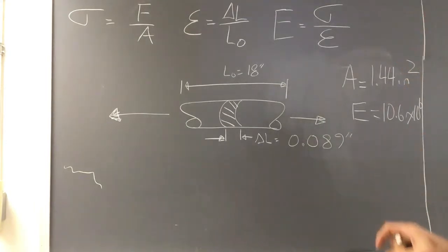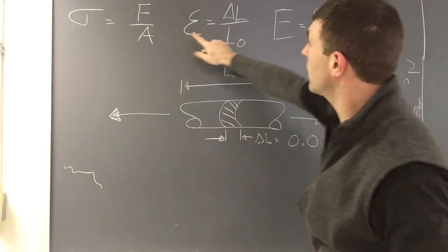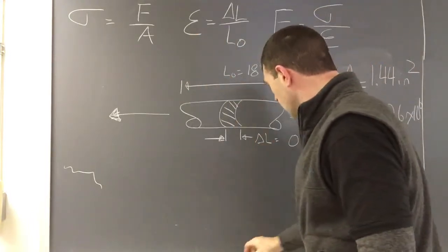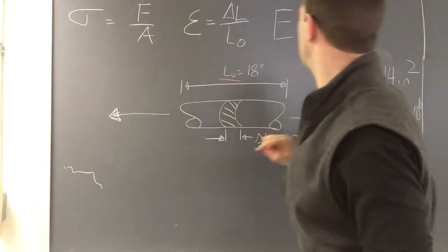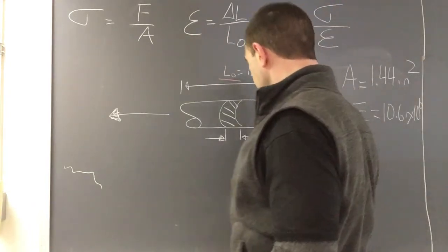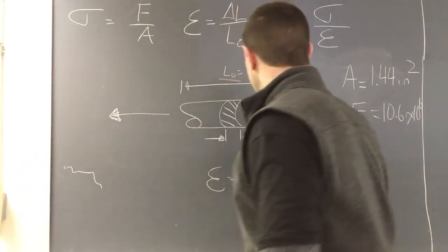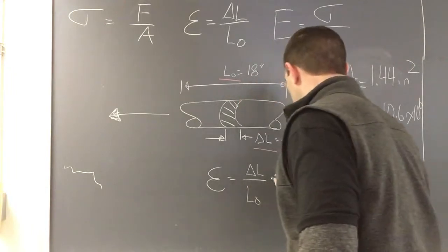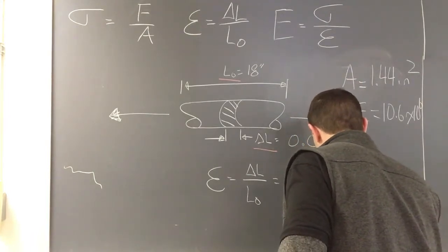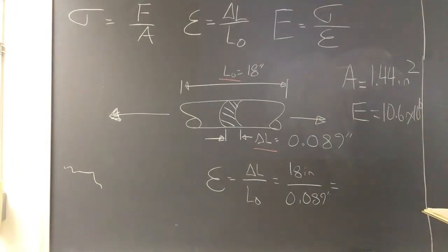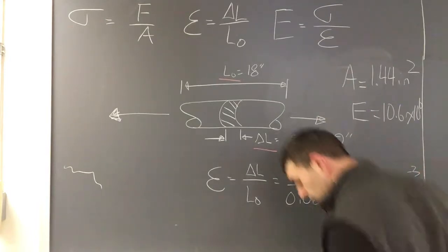The first thing we're going to do is find strain, because we already have L original and change in length. So let's just find this real quick. Strain equals change in length over length original: 0.089 inches over 18 inches equals 4.44 times 10 to the negative 3 inches over inches. Nice tiny number.